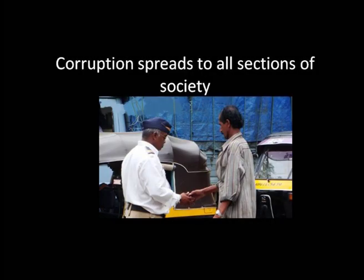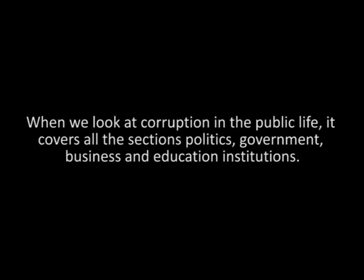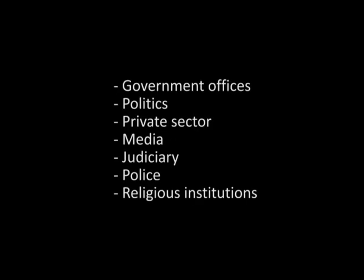Corruption starts at the top level and then slowly spreads to all sections of the society. When we look at corruption in public life, it covers all sections — politics, government, business, and education institutions. Corruption happens in every sector: government offices, politics, private sector, media, judiciary, police, and religious institutions.